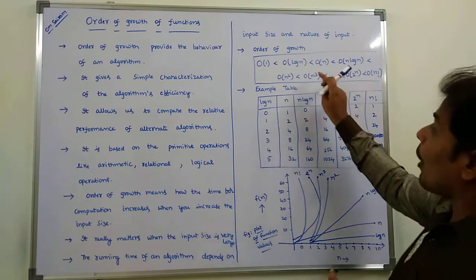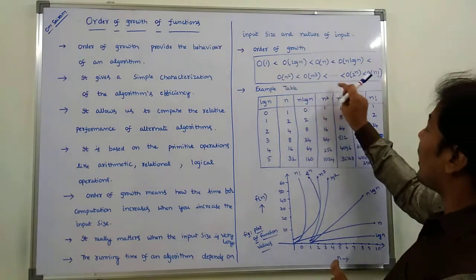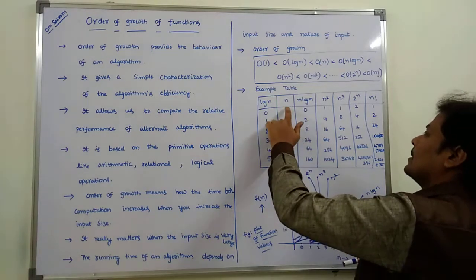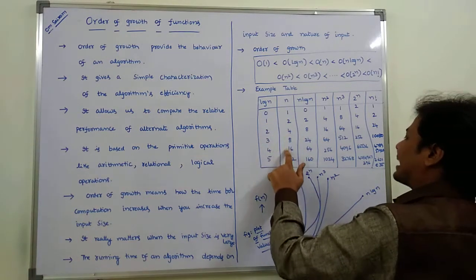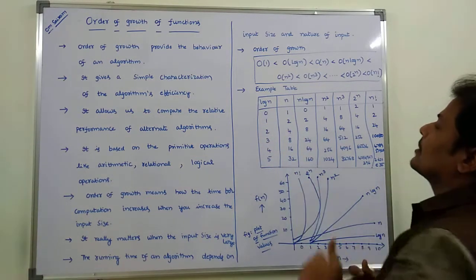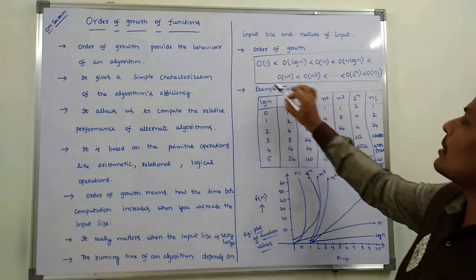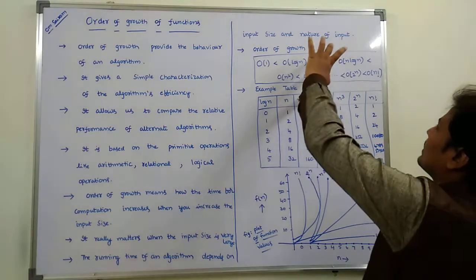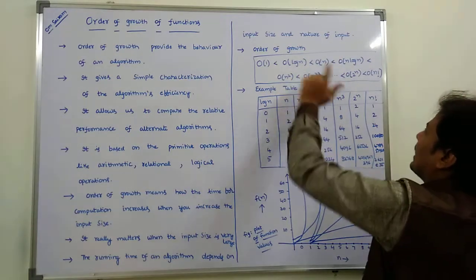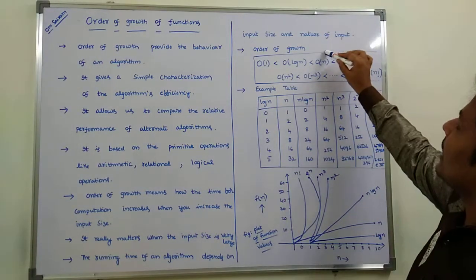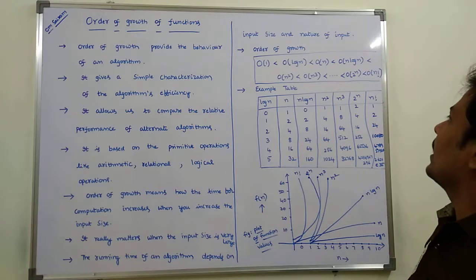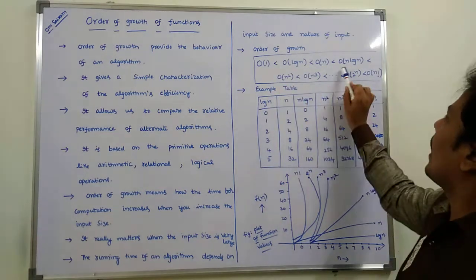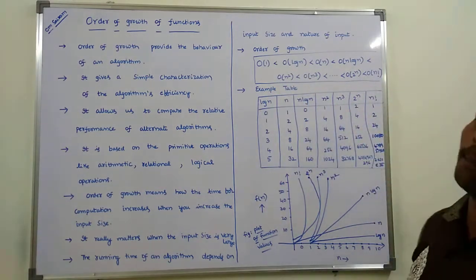At some point this condition may fail for small values, but after n increases sufficiently, this condition holds true. By using this relation, we can identify lower bounds and upper bounds for a given function.